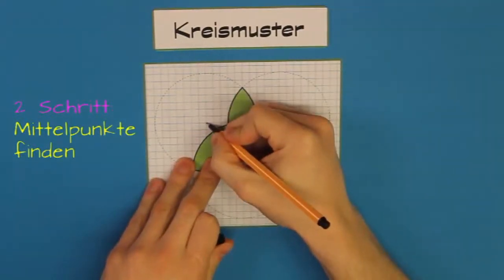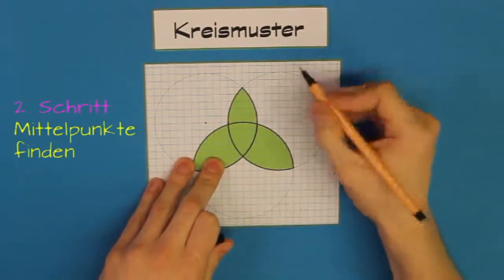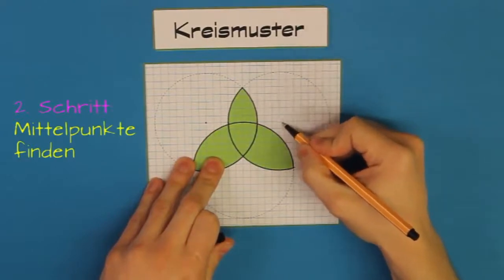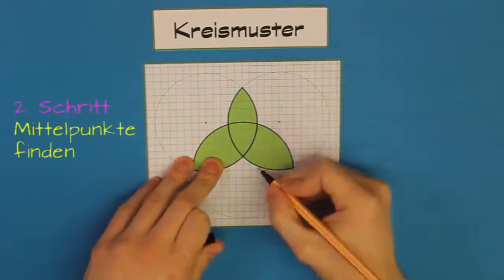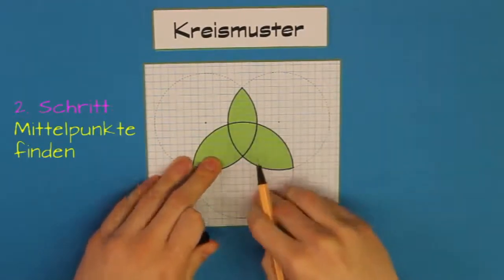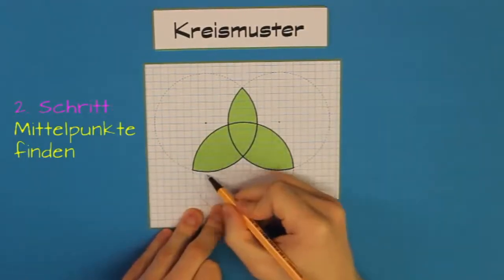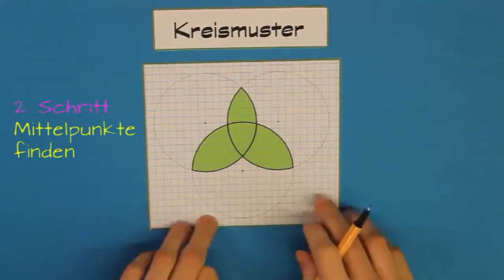Beim ersten Kreis ist der Mittelpunkt zum Beispiel hier. Beim zweiten Kreis probieren wir wieder etwas herum und sehen, dass der Mittelpunkt hier liegen muss. Und beim dritten Kreis müsste er eigentlich genau hier sein. Genau, perfekt.